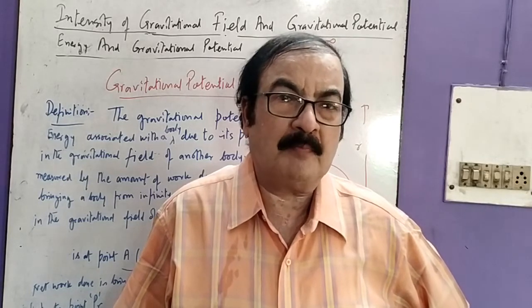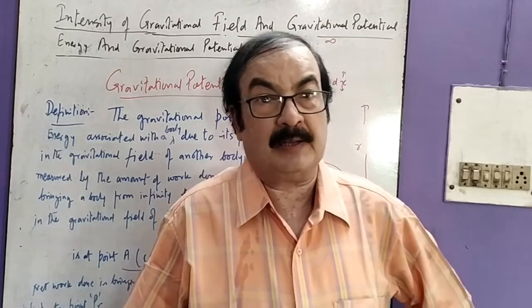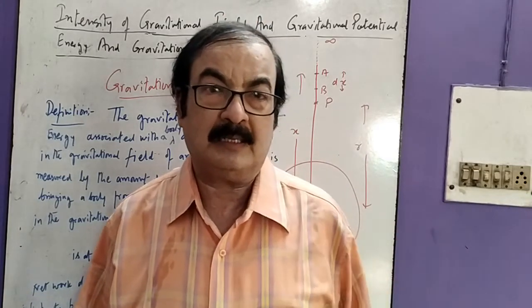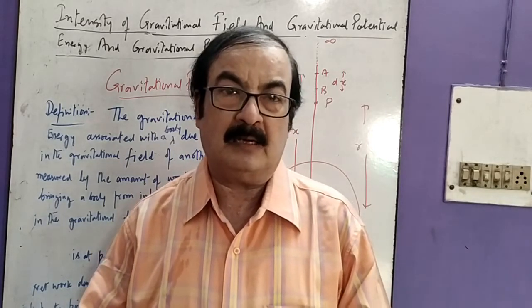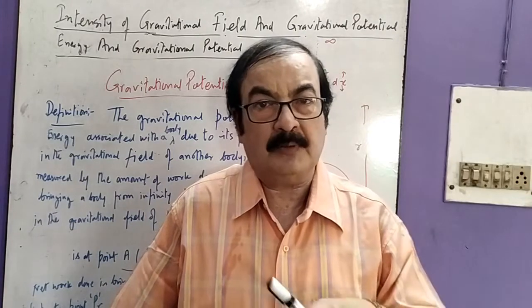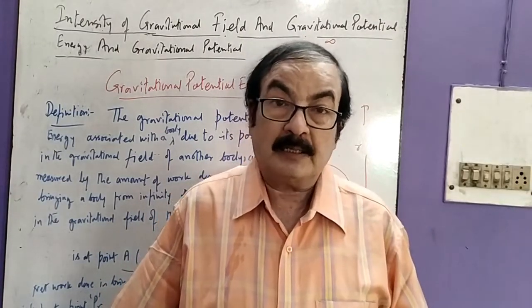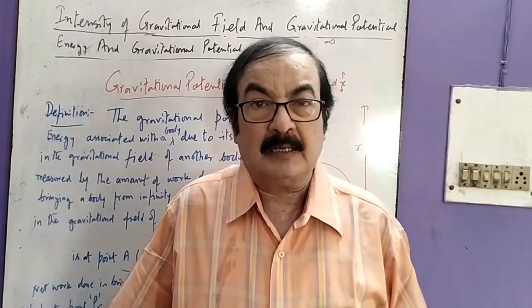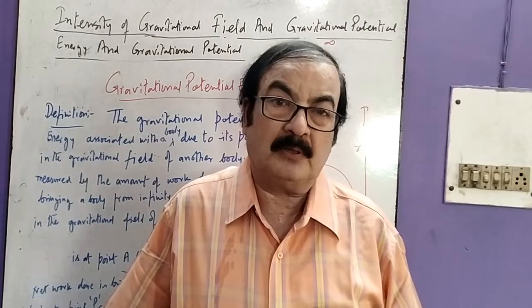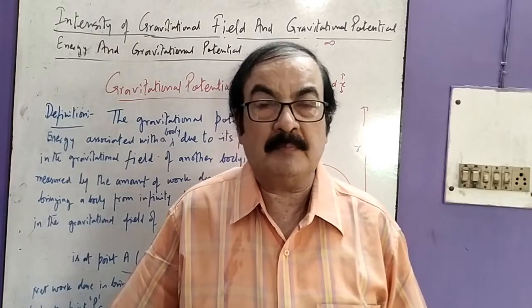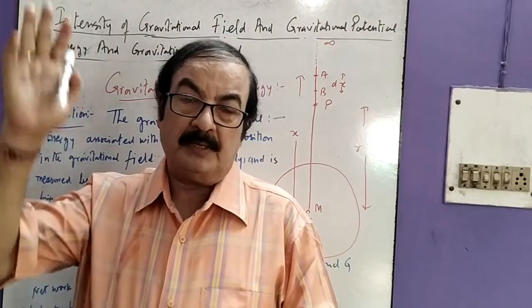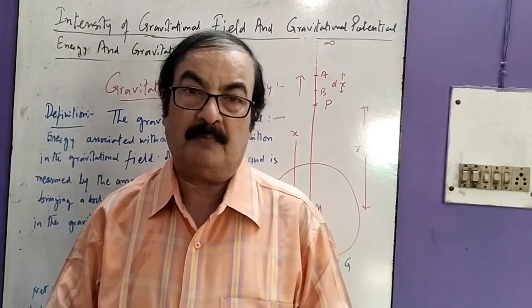Suppose a body of mass small m is in the gravitational field of another body of bigger mass, say capital M. Obviously it means that the gravitational field of the bigger mass is dominant. Therefore we can call it the small body which is placed in the gravitational field of the bigger body, capital M. Gravitational potential energy due to a given mass is that amount of work which is done in bringing the body of mass small m from infinity into the gravitational field of another body of mass capital M.